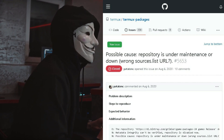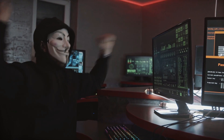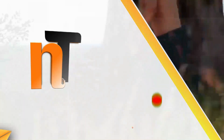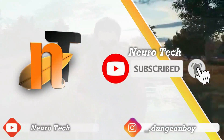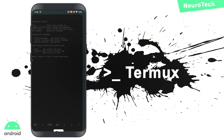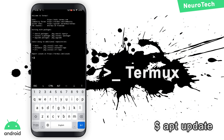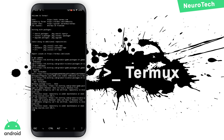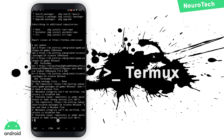Due to some reason, don't be frustrated. In this video, I am going to teach you how to change your repository. Let's get in with me. First of all, run APT update and confirm that I am going to get an error. Look, the error has come. Let's go to the solution.